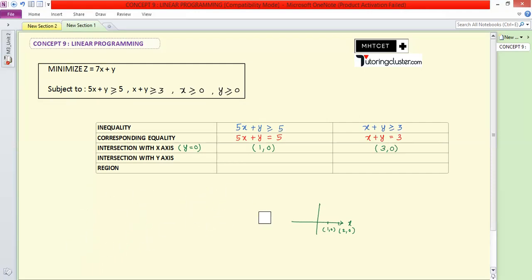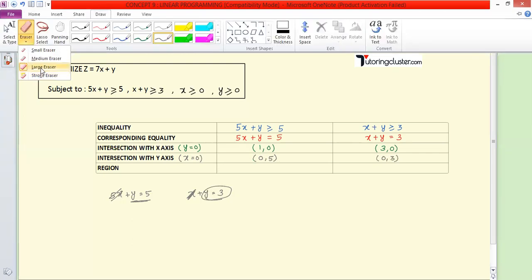Next, intersection with y-axis. To get intersection with y-axis, put x equal to 0. For the first equation 5x plus y equal to 5, if x is 0, then y's value is 5. So the point is (0,5). For x plus y equal to 3, if x is 0, then y is 3, giving the point (0,3). Hope this is clear.